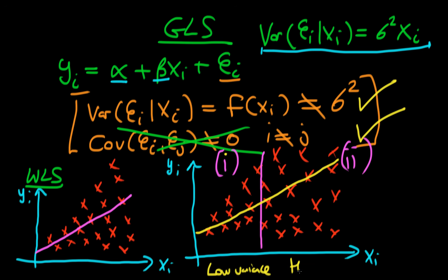Region 2 is a high variance region. I'll assume there's an original line — either weighted least squares or OLS — and think about what happens when I add an extra point to the sample. First, let's consider adding an extra point in the low variance region.